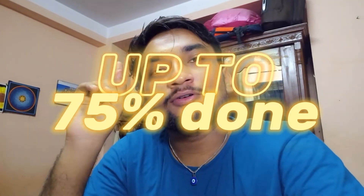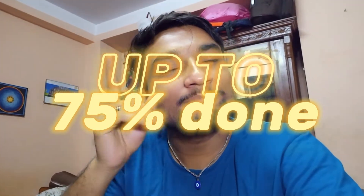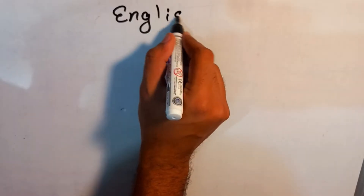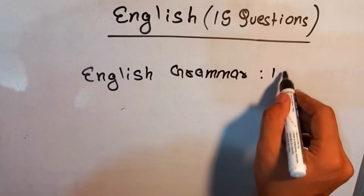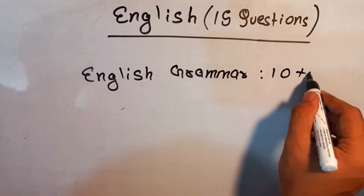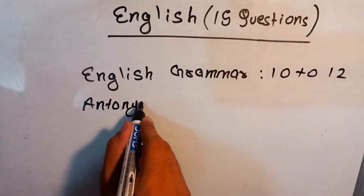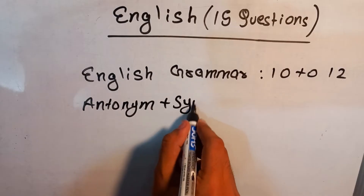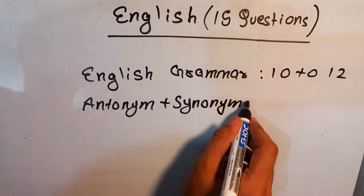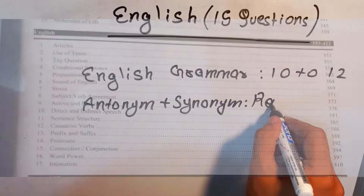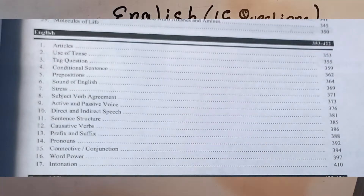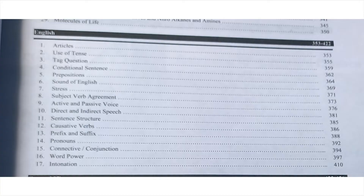Until now we have talked about 75 marks worth of questions. Next up we have 15 marks from English. Here 10 to 12 questions related to English grammar are asked, and the remaining questions are related to antonyms, synonyms, and similar things. Here is the list of chapters that you need to keep in consideration while preparing for English.